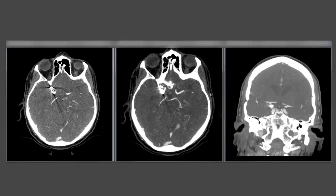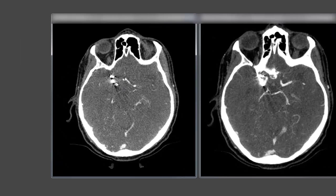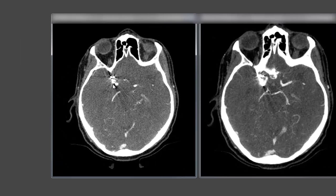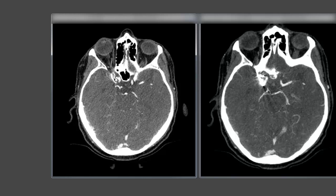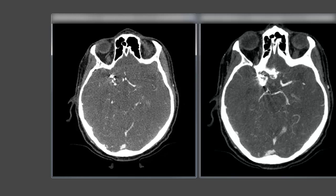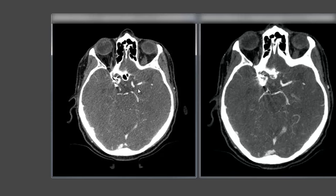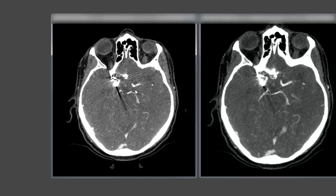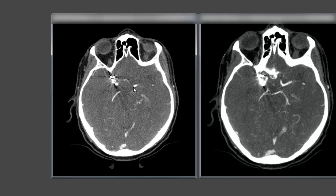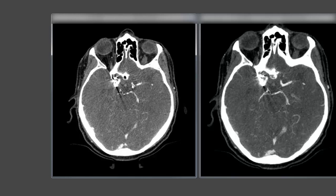Here's another example of an MCA occlusion — in this case a left MCA occlusion. Again we have source images and two planes of thick MIPs reconstruction. On the source images, this patient provides a bit of a distraction because they have a history of a cerebral aneurysm that was clipped, resulting in some scattering beam hardening artifact on the right side. Focusing on the area of interest on the left side, in this patient with right hemiparesis and aphasia, we see the carotid terminus coming up.